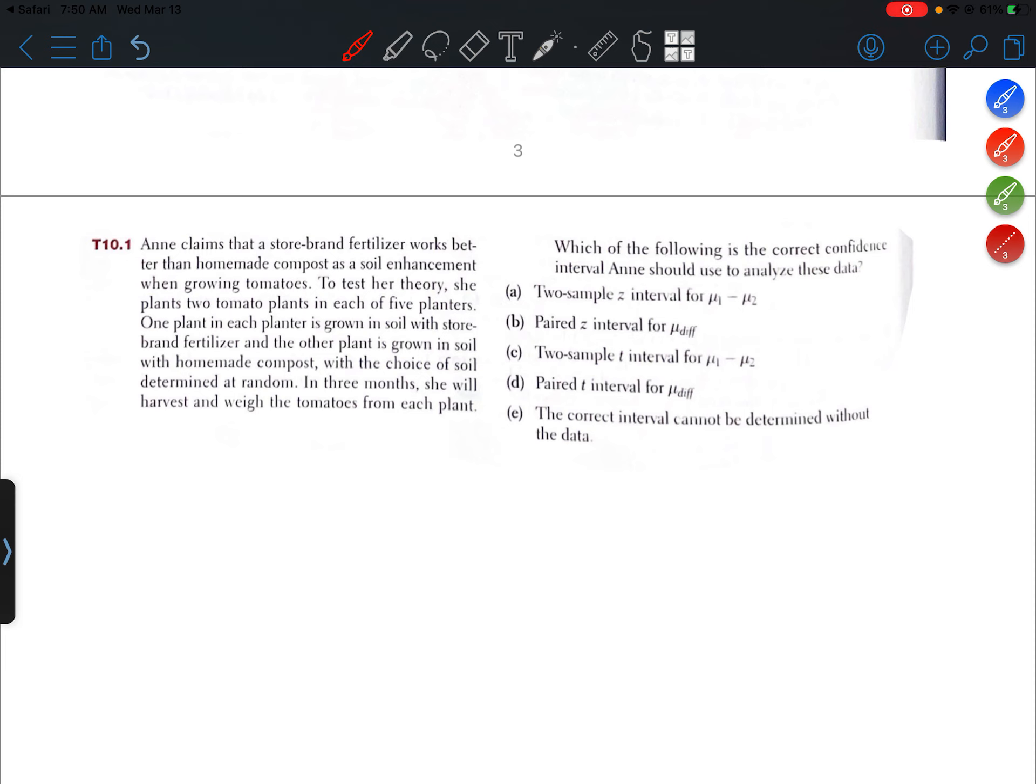One plant in each planter is grown in soil with store-brand fertilizer, and the other plant is grown in soil with homemade compost, with the choice of soil determined at random. In three months, she will harvest and weigh the tomatoes from each plant.